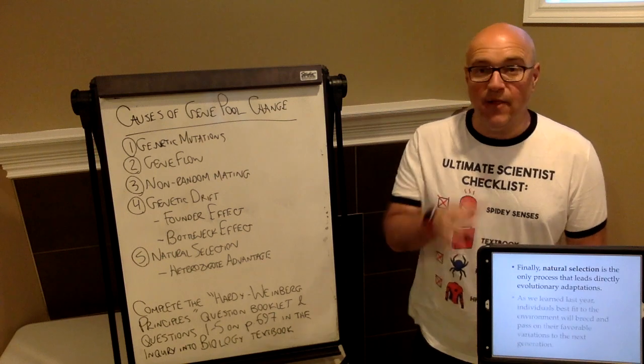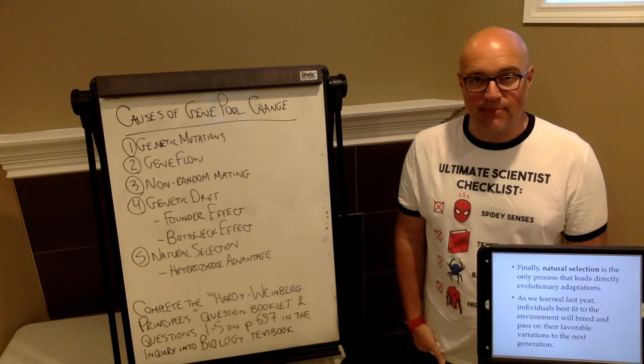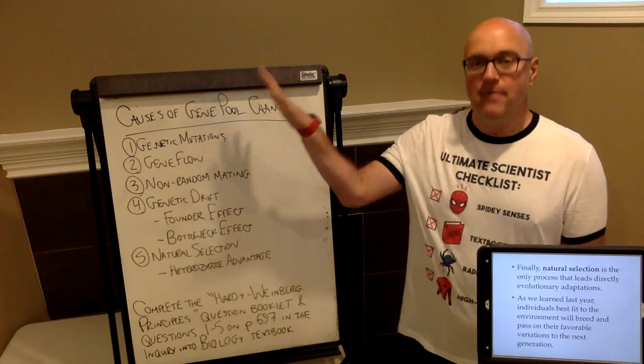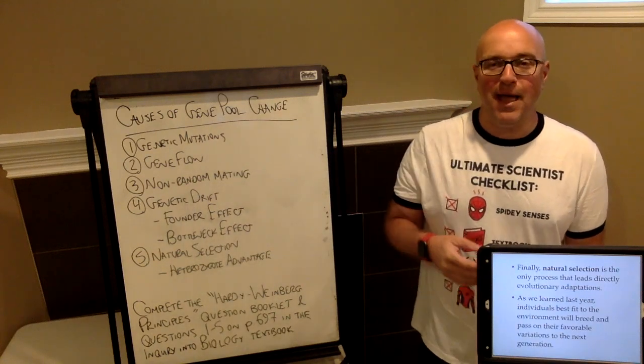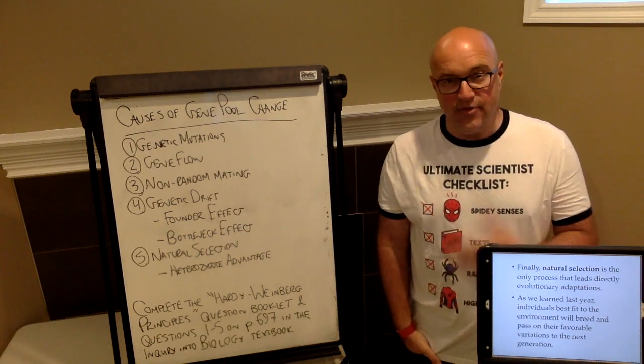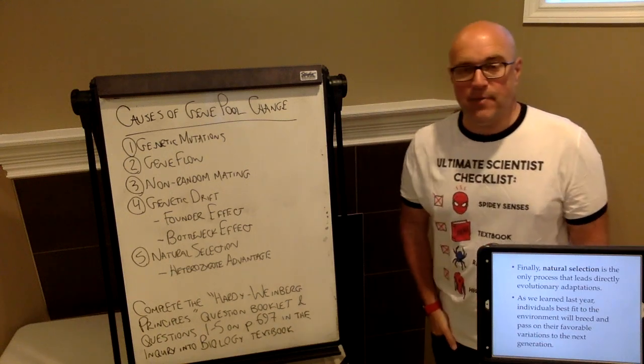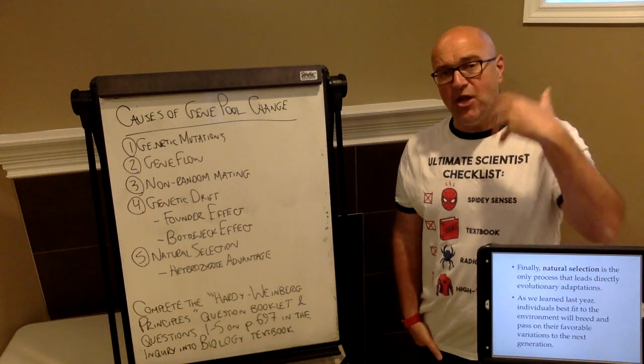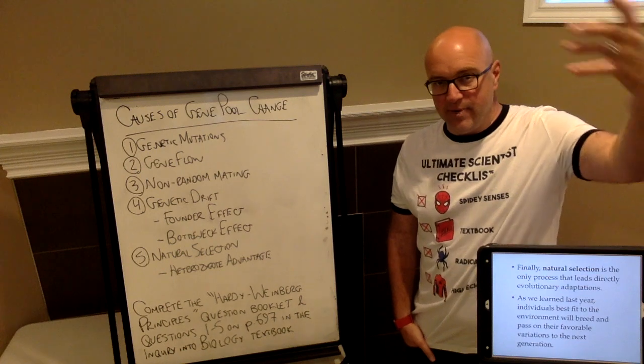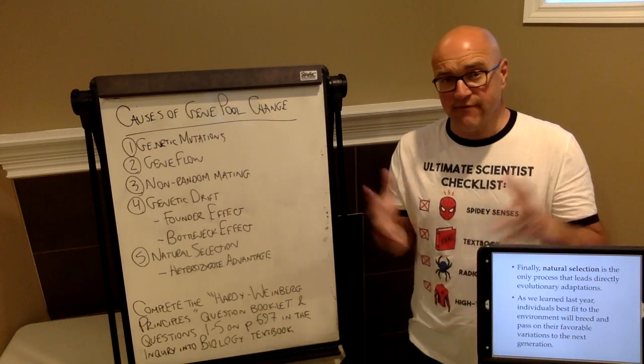The last one, natural selection, is the only process that leads directly to evolutionary adaptations. We know what natural selection does. It plays in with non-random mating and mutations, finding variations that are beneficial to the organism in their environment. This can drive gene flow change. If there's a certain allele that becomes more beneficial to a population, that allele will become overrepresented in that population.